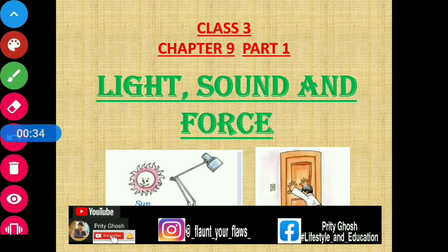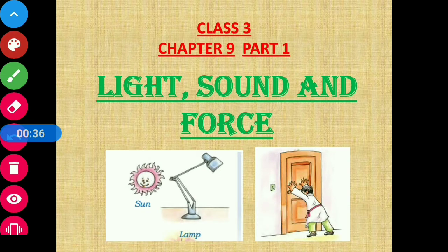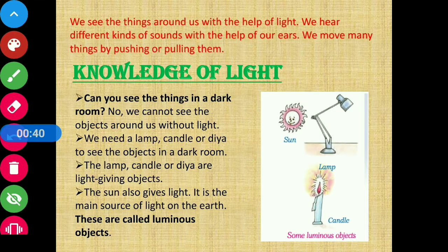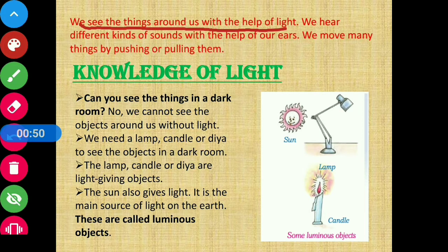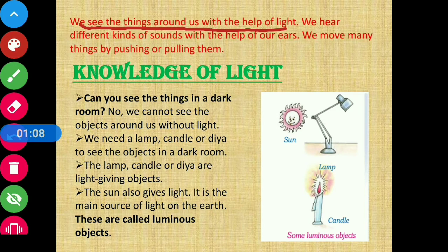So now without further ado, let's start with today's class. Students, we see the things around us with the help of light. Humare aaspaas jitni bhi cheezein hain, unko hum dekhte hain because light unpe padti hai. Jab andhera hota hai, dark room hota hai, to wahan pe kaunsi cheez rakhi hai hume nahi pata chalta — hum tab cheezein nahi dekhte. Matlab, hum kisi bhi cheez ko tab dekhte hain jab wahan pe light hoti hai. Then we hear different kinds of sound with the help of our ears.